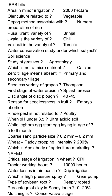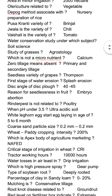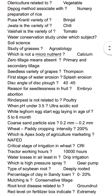Zero tillage means the absence of primary and secondary tillage; it is derived from the USA. The seedless variety of grapes is Thompson Seedless. The first stage of water erosion is splash erosion. The disc angle of a disc plow is 40 to 45 degrees.